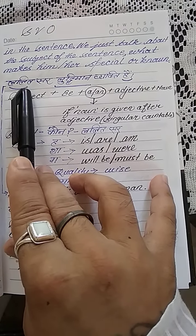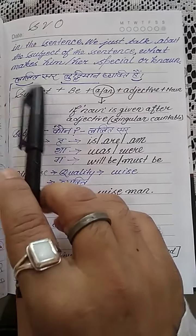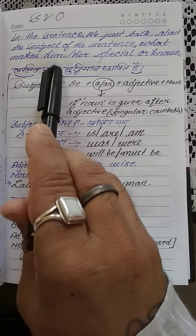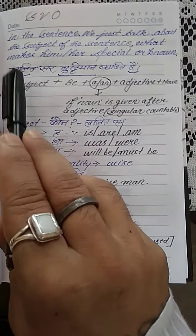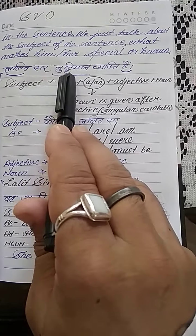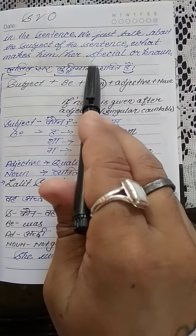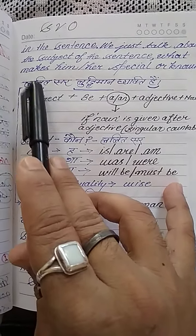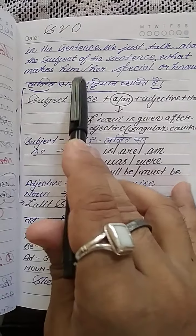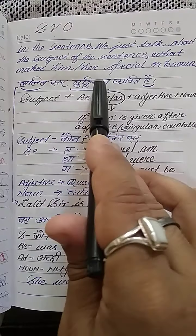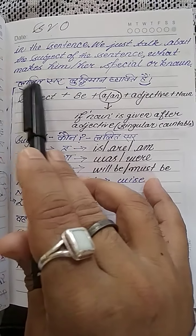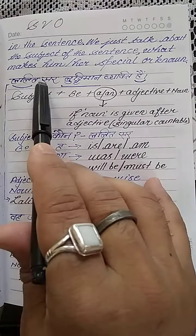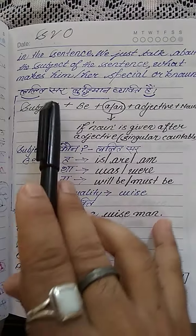Look at this example: 'Lalitsar buddhiman vyakti hai.' There are so many Lalitsars, but we are talking about that Lalitsar who is considered wise by us. This is the quality of Lalitsar — the quality which makes him very special, which makes him identified. The particular adjective used for Lalitsar is describing something special about him. Work is not being done here by Lalitsar; the speaker is going to talk about something special about Lalitsar.